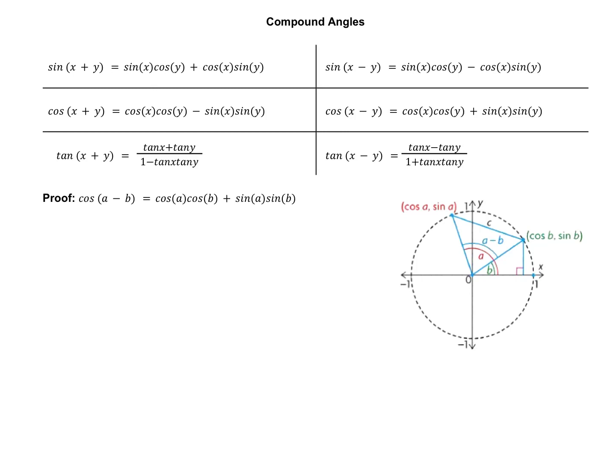In this video, we will look at some proofs for the compound angle formulas. We're going to start with our cosine compound angle formula. We will prove that cos(A − B) = cosA·cosB + sinA·sinB. It's going to use your knowledge of two prior things: cosine law, and the distance or length of a line segment given two endpoints.